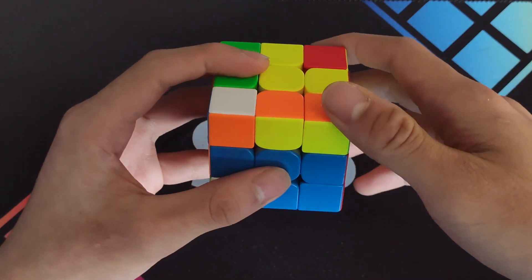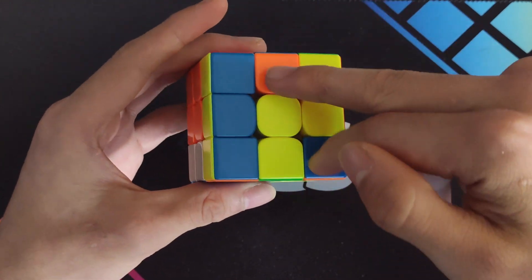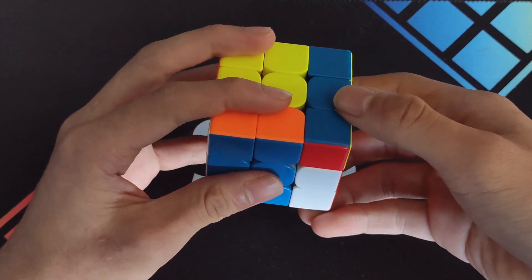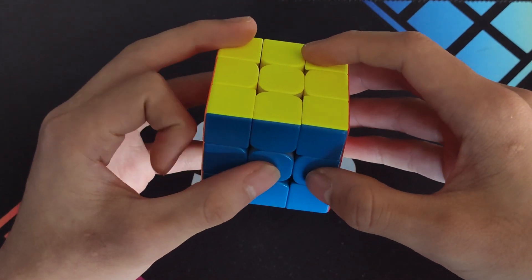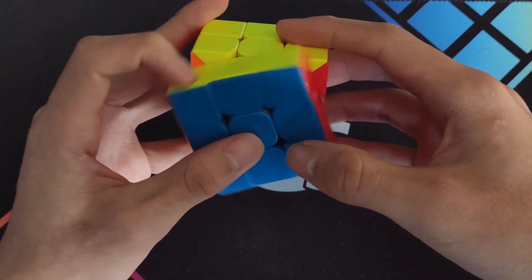For instance, there's this case, where you do an F, R', U2, R, and then you want to solve this into the front-left, so you do an R, U2' with these two fingers here, R', and then an F'. You will also need to get quite good at doing F' moves with your left index finger, like so, with this pinch.